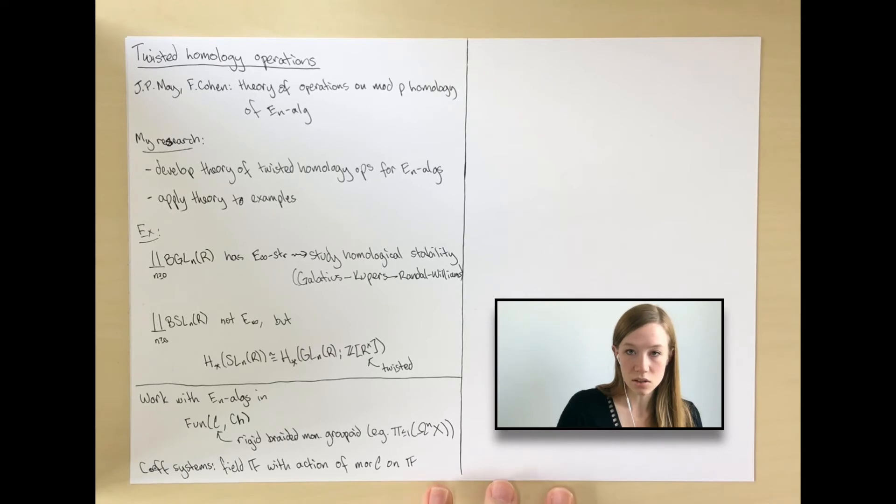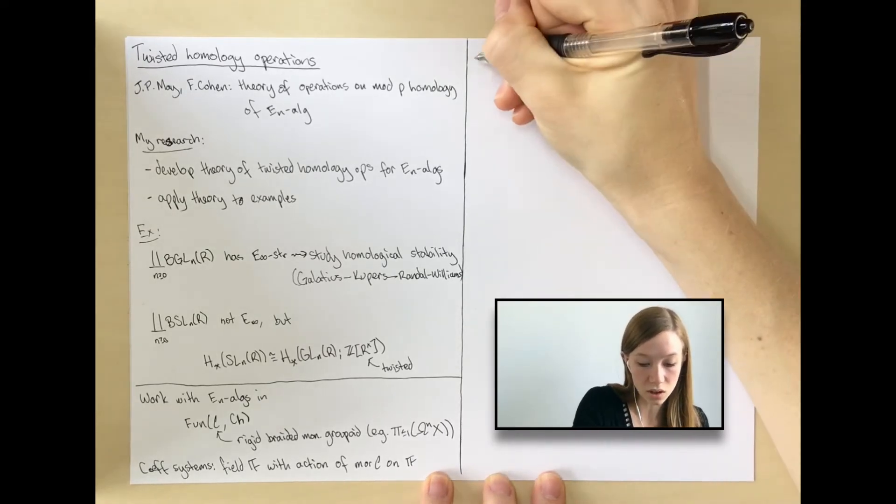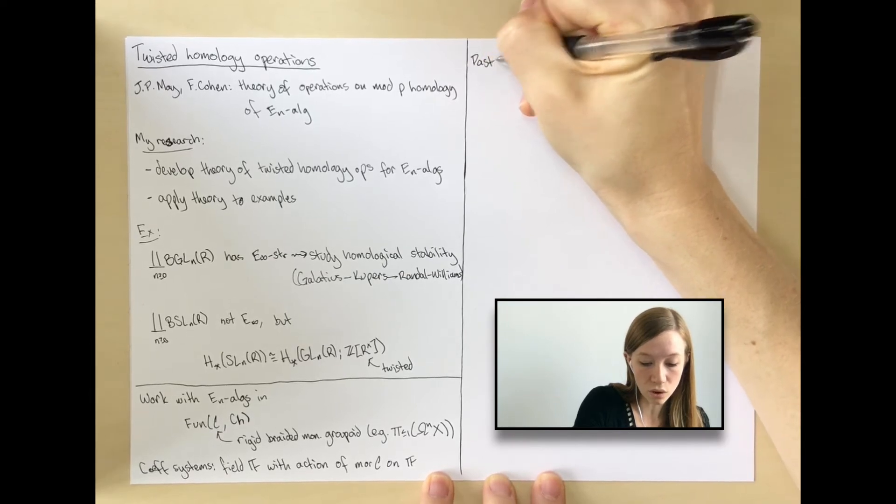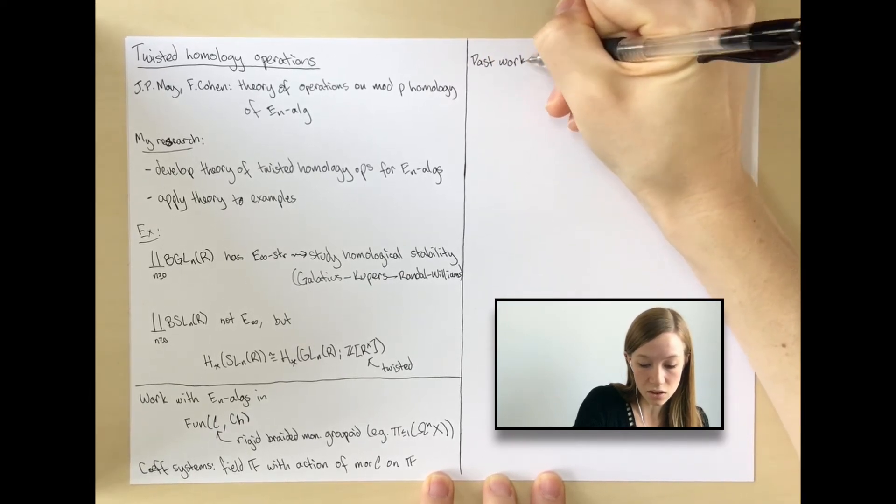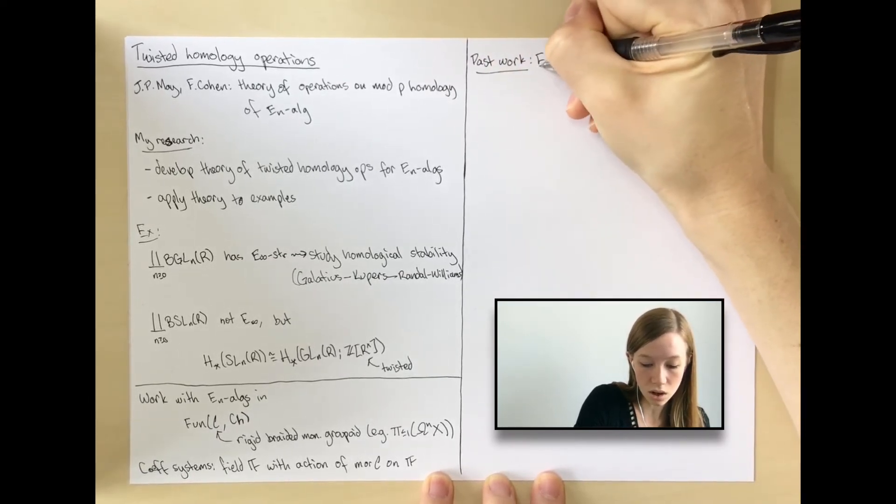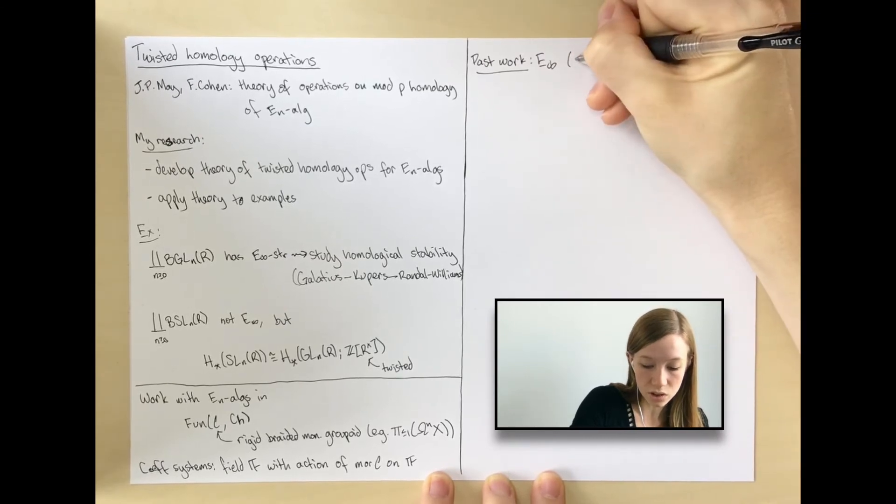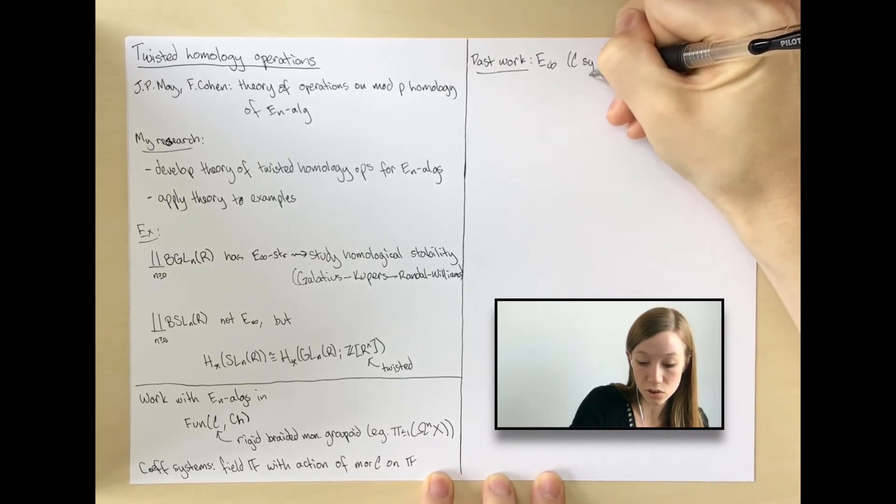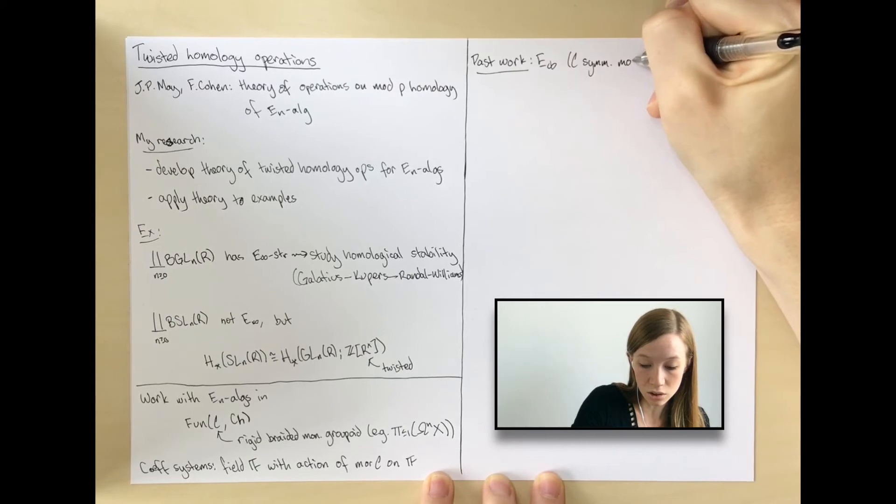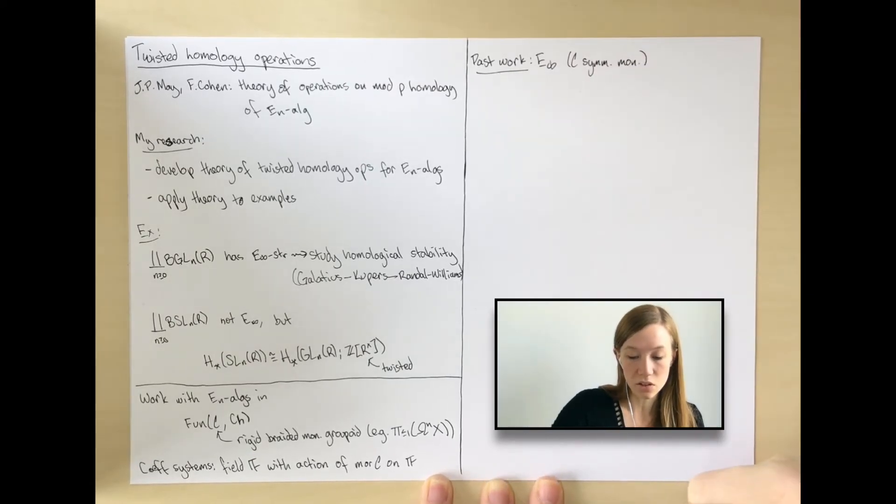So maybe I'll just say some of the key features that are different about this setting from the classical setting. I've already worked out the E-infinity case. When you work with E-infinity, you need to require that C be symmetric monoidal. Otherwise, it doesn't make sense to consider E-infinity algebras.